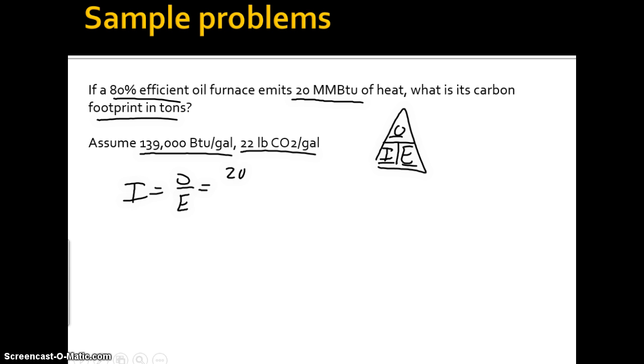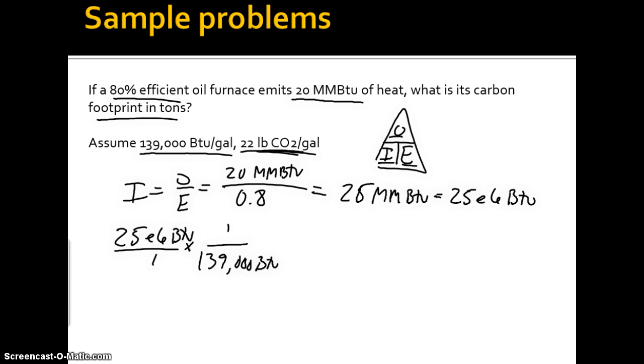So our output is 20 MMBTUs. Our efficiency is 80%. So our input then has to be 25 MMBTUs, which is 25 times 10 to the 6th BTUs. So now we have our BTU input. So what do we do to get our pounds of CO2? So we have to convert this to gallons of oil. So another unit conversion. 25 times 10 to the 6th BTU. And then we know that there are 139,000 BTUs in one gallon of oil. So let's do that first. So this is 179.86 gallons. BTU is going to cancel out. And then we know we have 22 pounds of CO2 per gallon. And again, one ton is 2,000 pounds.